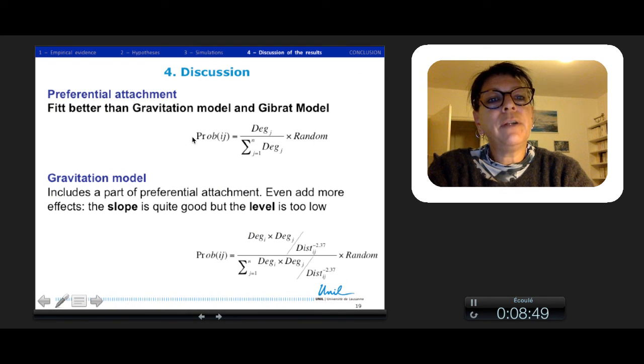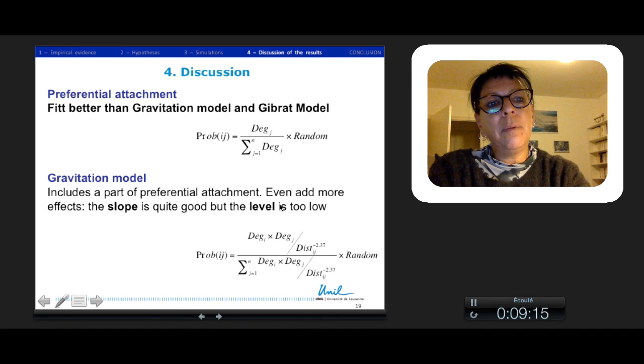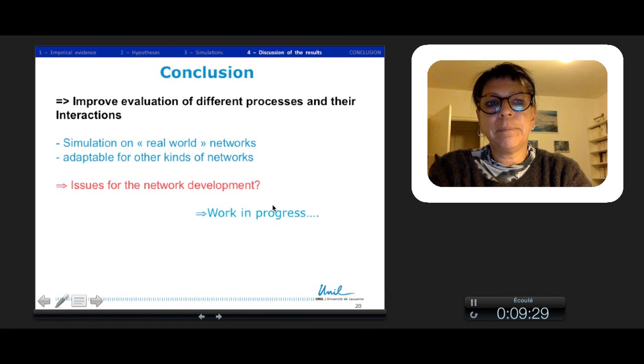The preferential attachment fits better than the gravitation model and Gibrat model. The gravitation model includes a part of preferential attachment that even adds more effect. We think that maybe the slope is quite good but the level is too low. The problem is that maybe the cost of distance could be more appropriate, and we must include strategies of companies.